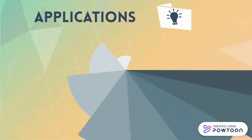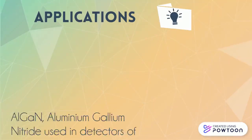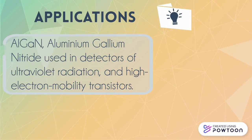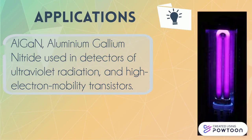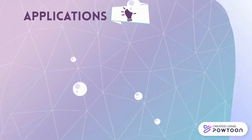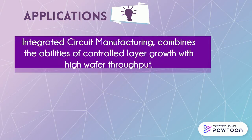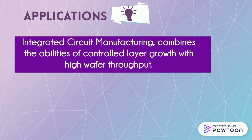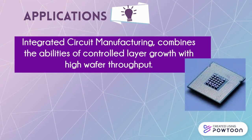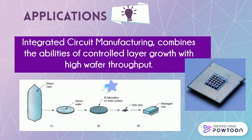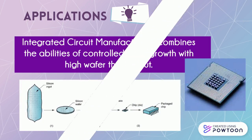An example application of this method is aluminium gallium nitride used in detectors of ultraviolet radiation and high electron mobility transistors, as shown in the photo on the right. Another application is in integrated circuit manufacturing, which combines the ability to control layer growth with high wafer throughput, as seen in the photo on the right.